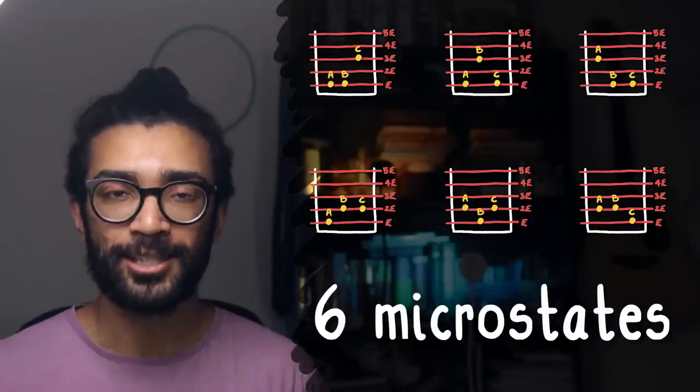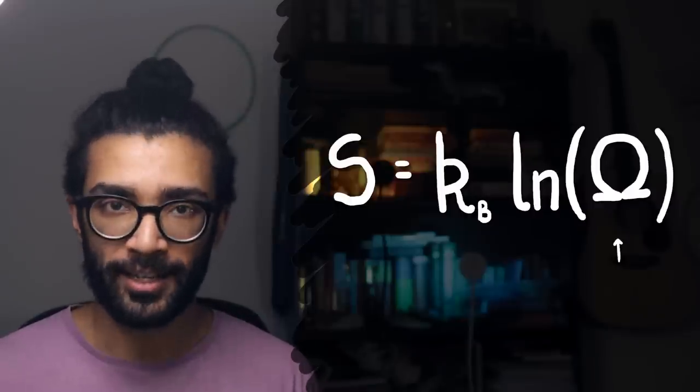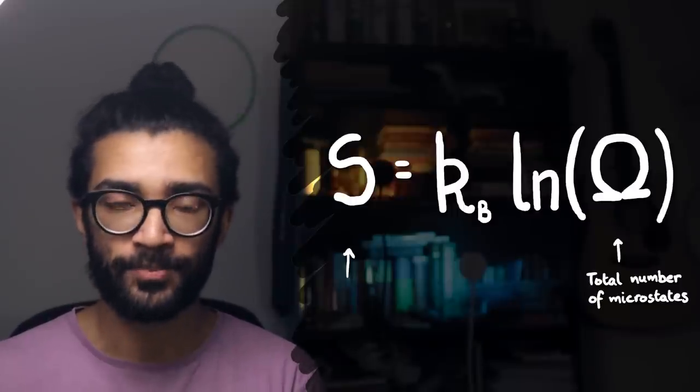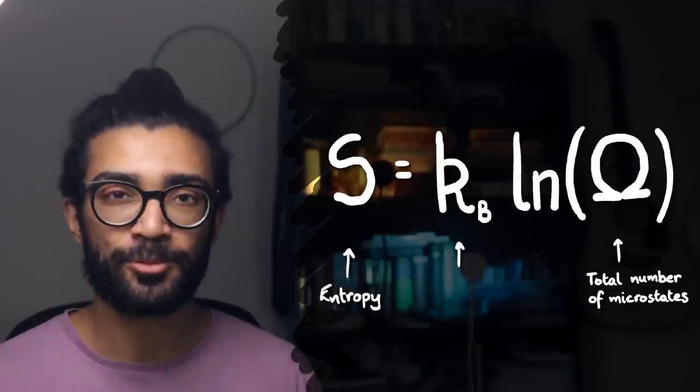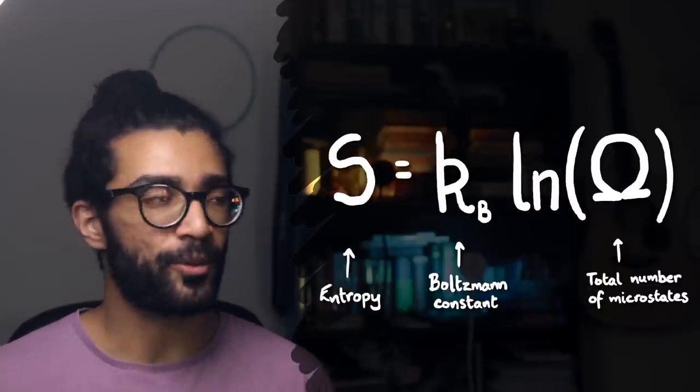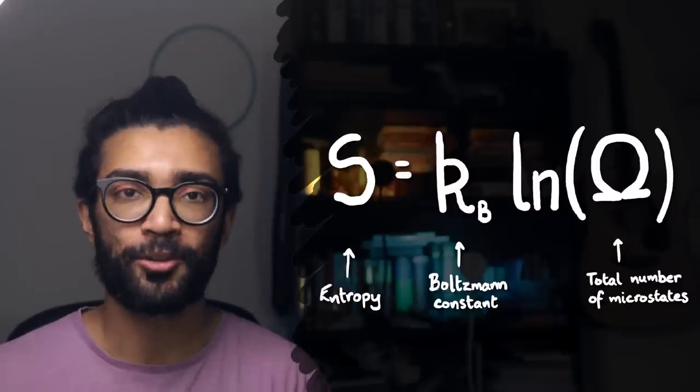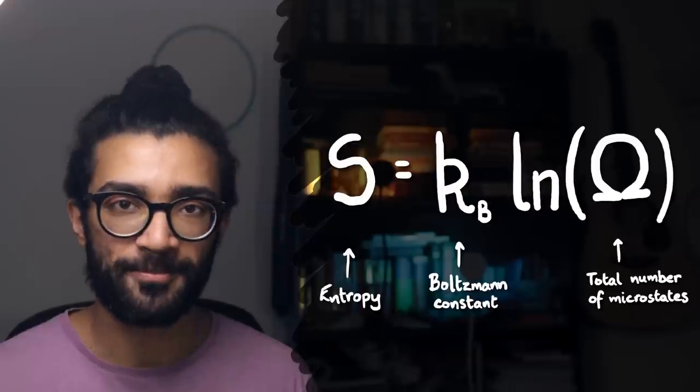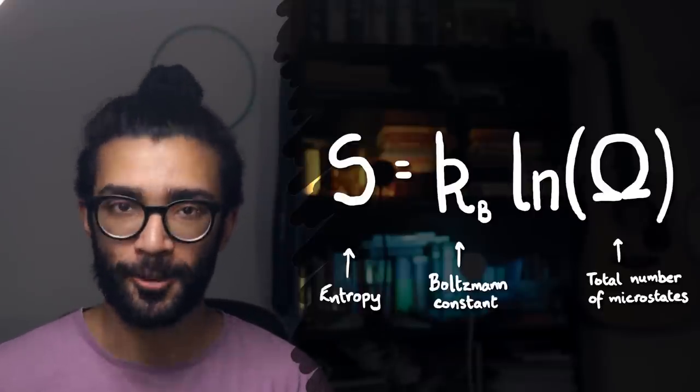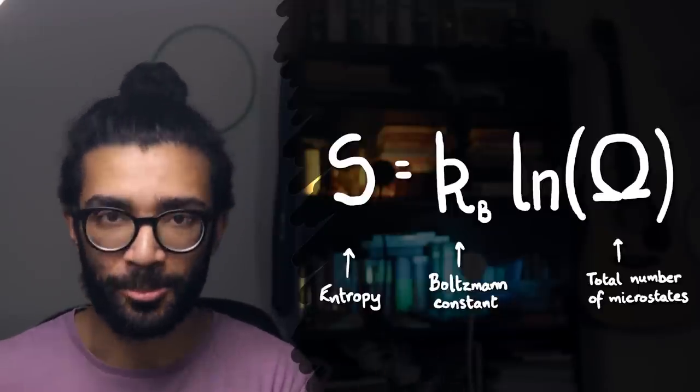In fact, if we look at the equation that I put up on screen right at the beginning of the video, this quantity, omega, is actually the total number of microstates a system can occupy. And S is the entropy of the system. K subscript B is known as the Boltzmann constant. And of course, we've got the natural logarithm, ln, of omega, which is the total number of microstates a system can occupy. By the way, if you're not comfortable with logarithms, I'll leave some resources in the description below.